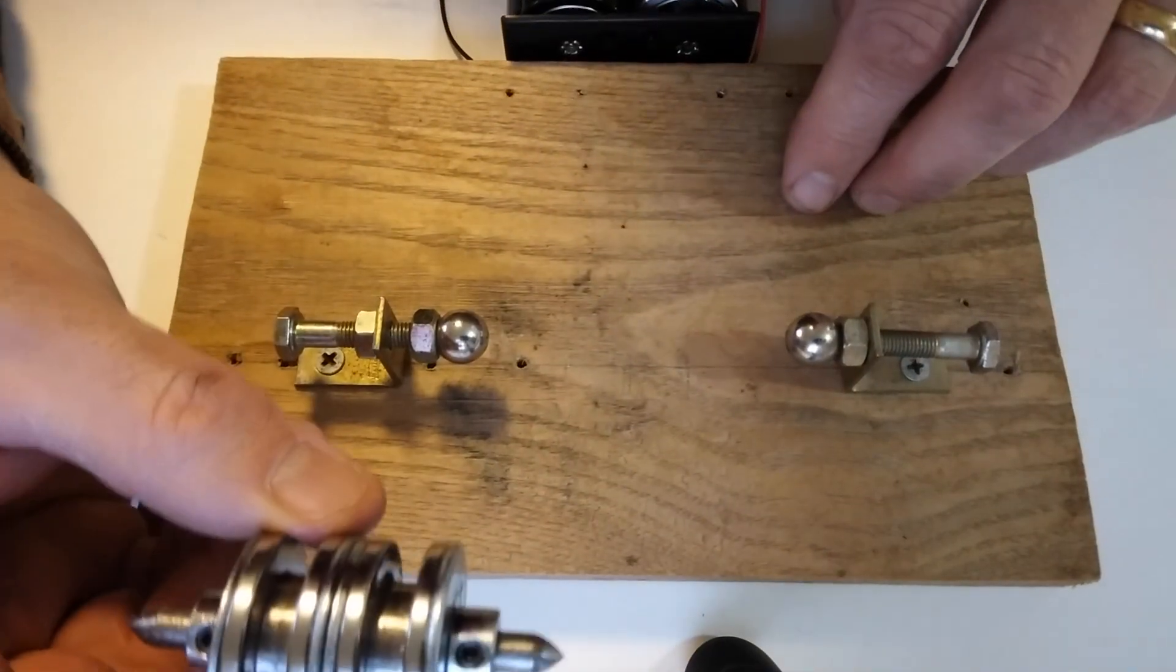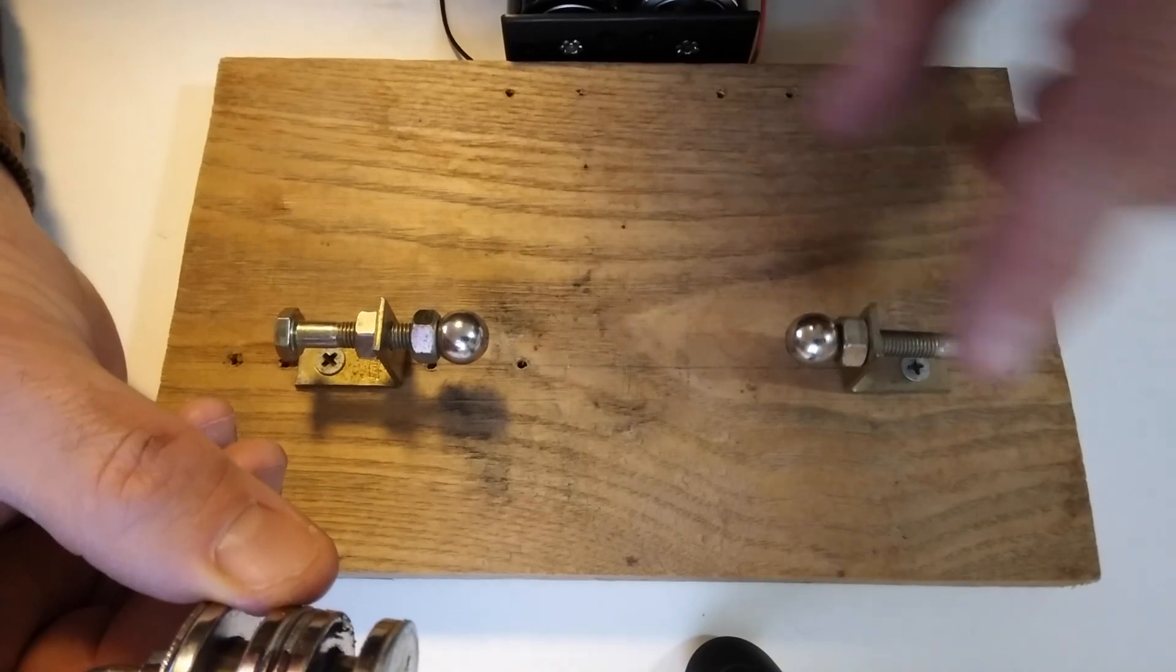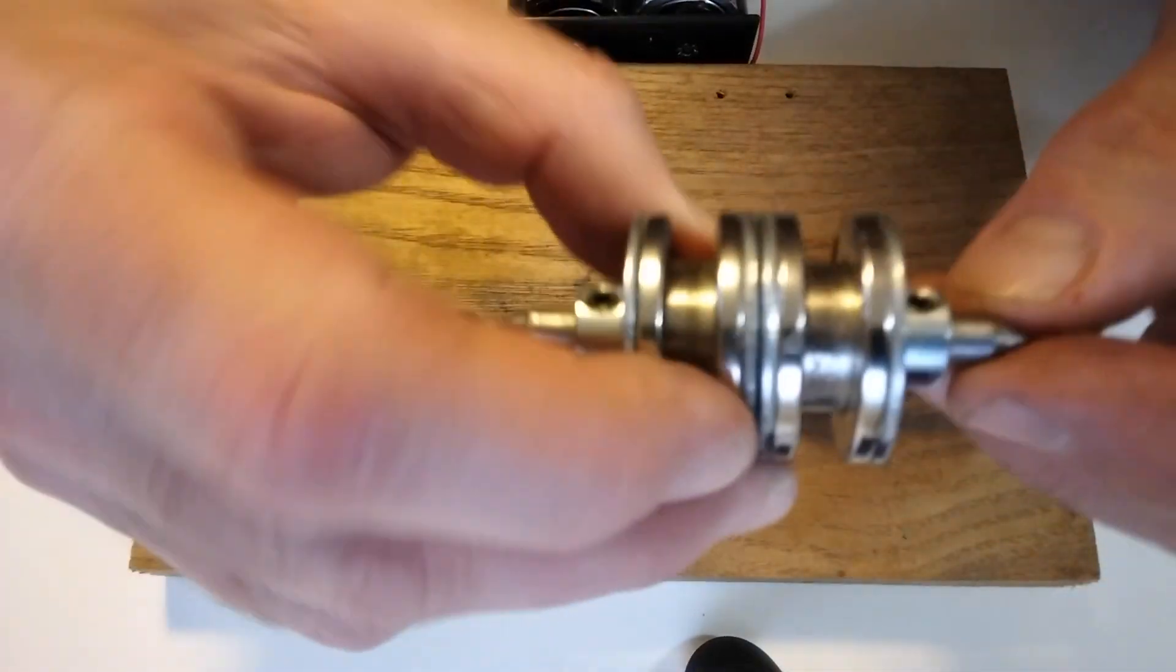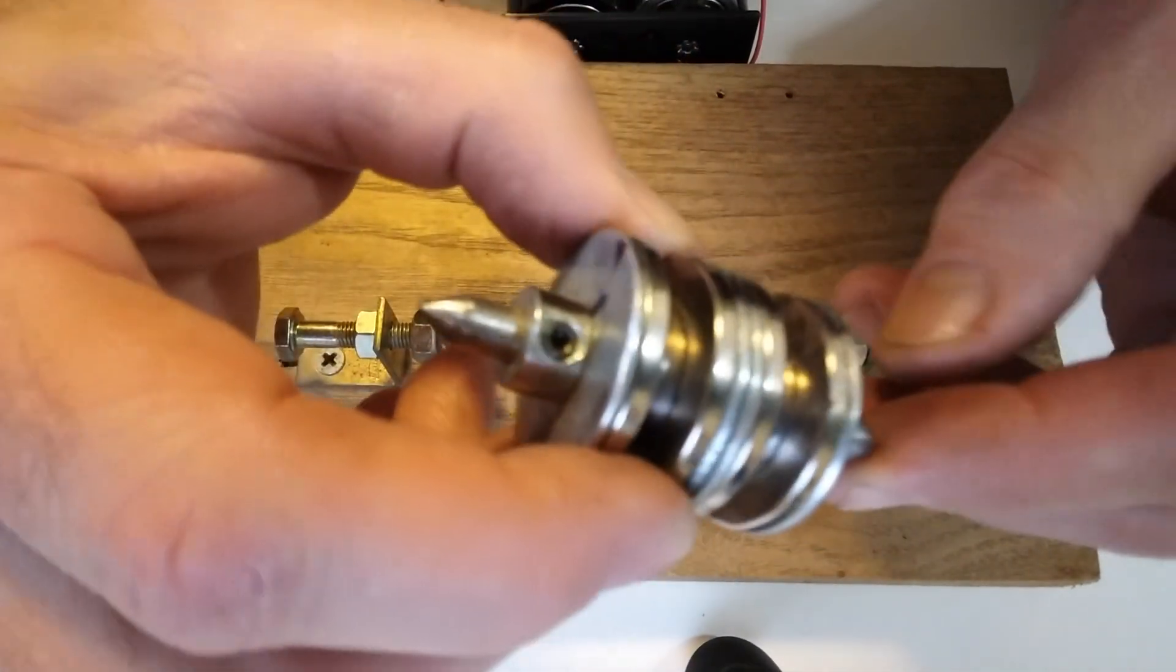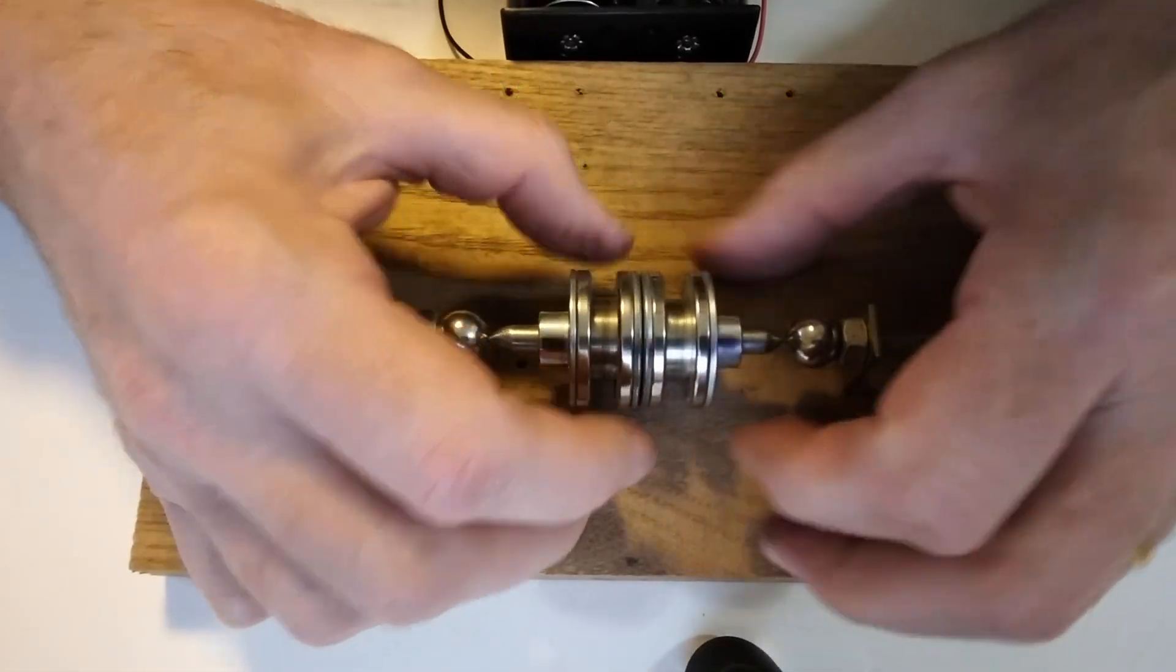What I'm using for bearings are these two spheres that are magnets, and the shaft of this rotor is just pointed and it just sits right in there. It floats right in there.